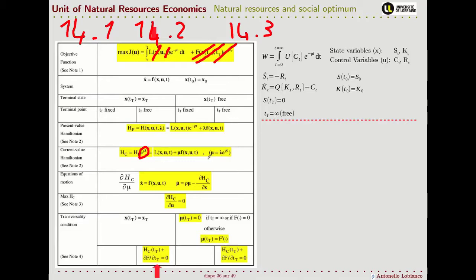When we do this, those exponential terms disappear and we replace our previous co-state variables with new co-state variables expressed in current value. The co-state variable tells us how much the Hamiltonian would increase by an additional marginal unit of the state variable — it gives in a certain sense the value of our state variable. In this case we are interested in the value of the stock of natural resources and the stock of capital. Because we are maximizing utility, this value is expressed in terms of current value utility.